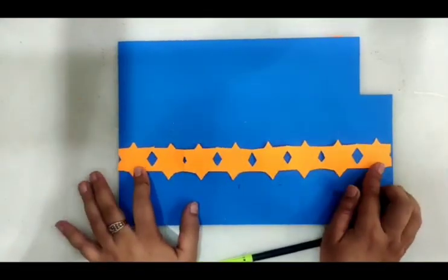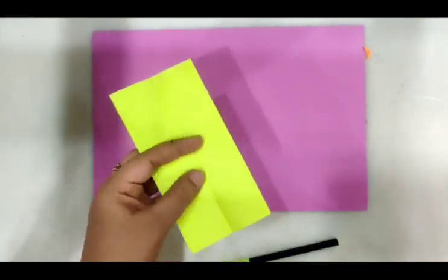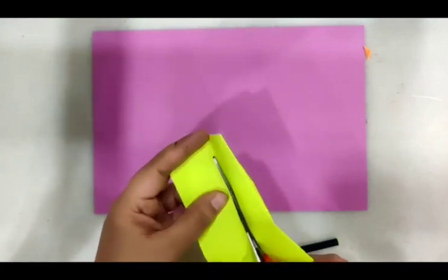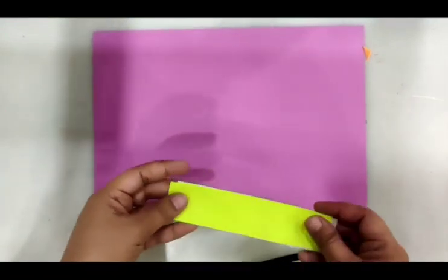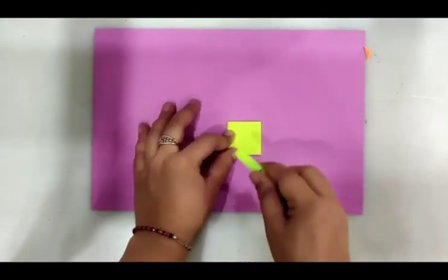You can paste this on another sheet and use the border. Now let's learn another border. Here I am using origami paper. Fold and cut it in the way it is shown in the video.